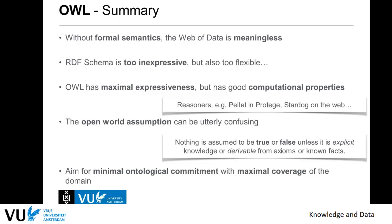The ultimate goal of building an ontology is to achieve minimal ontological commitment with maximum coverage of the domain. You want to be able to say as many things as possible and solve your problems without over-specifying the properties of your classes, instances, and properties.